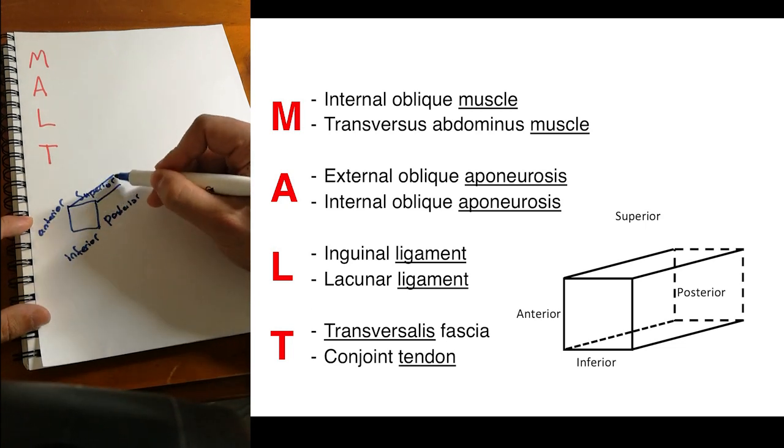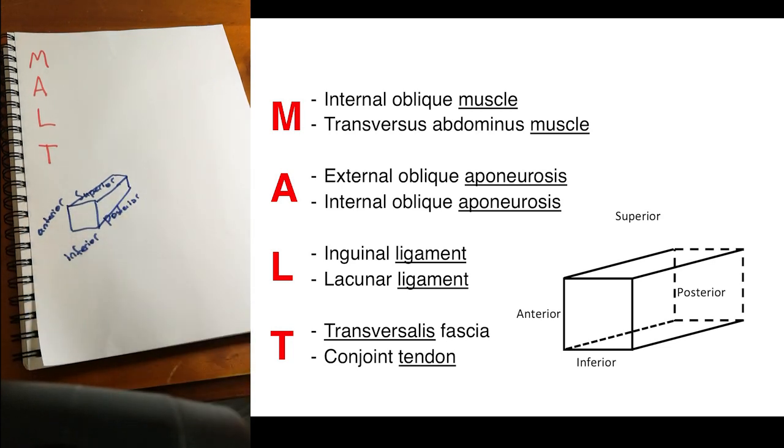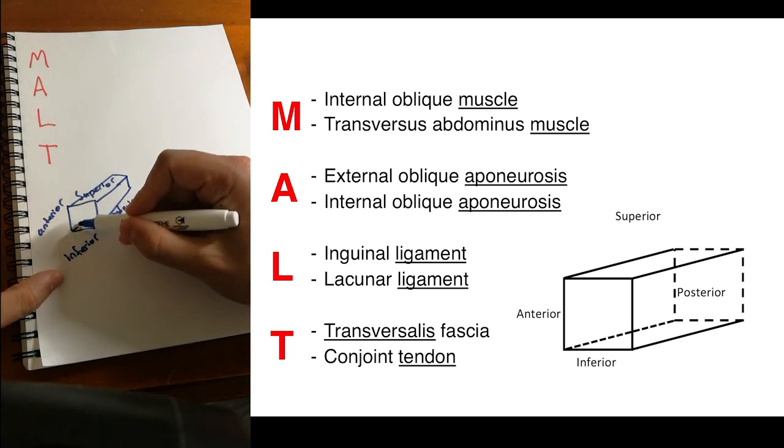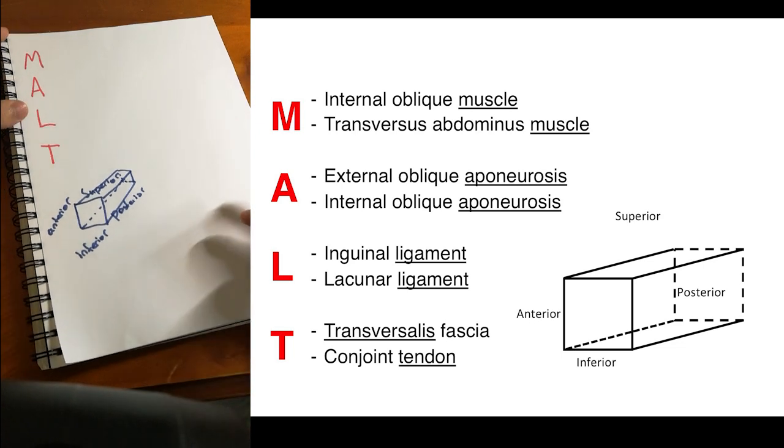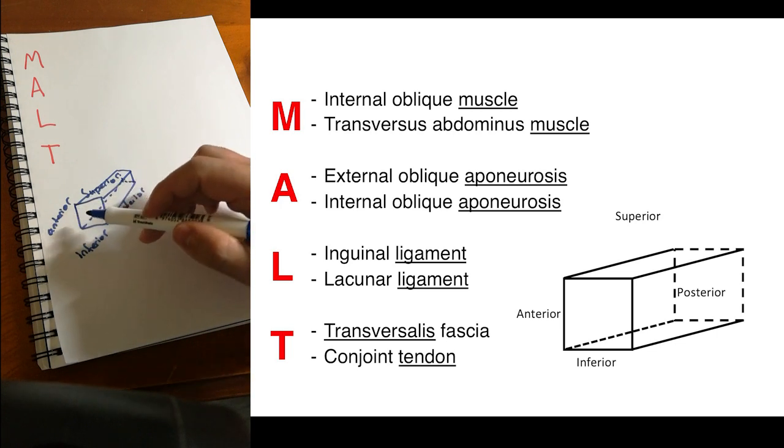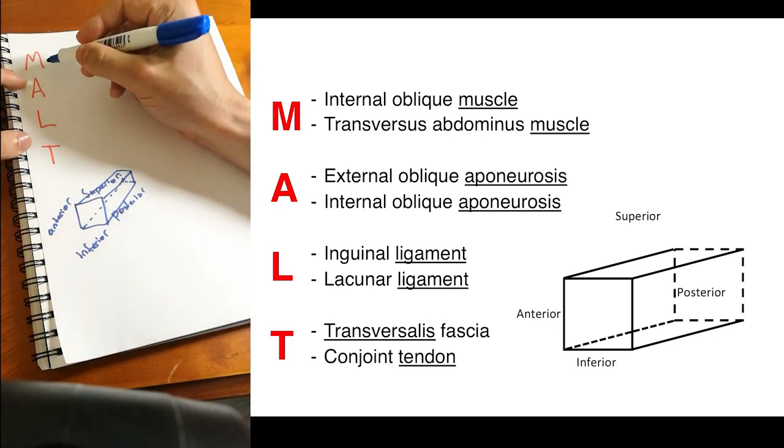And you can kind of think of it as sort of like a rectangular three-dimensional structure here with the canal being in the middle there. So MALT refers to essentially the inguinal canal borders, which has two structures at each of these borders.